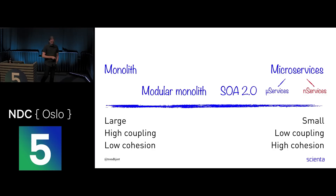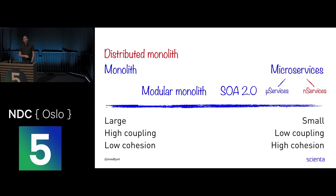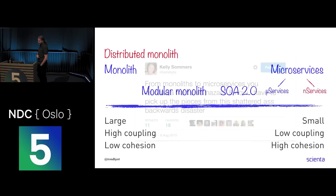And you've got what I'd call nano services — also referred to as nano services in the SOA pattern books — they are too small, too independent of each other, and you risk ending up in a situation where you've got the whole monolith still: everything is the same, a large highly-coupled system with low cohesion. You sort of create the monolith and just add a network in between, and you get all those lovely fallacies of distributed computing.